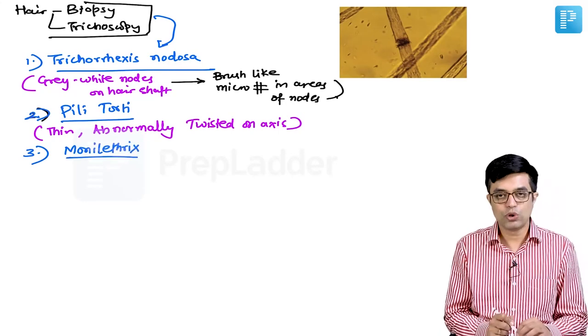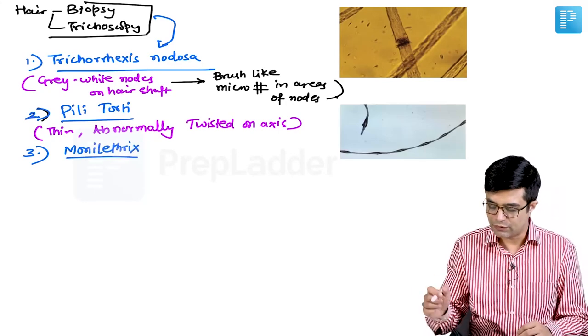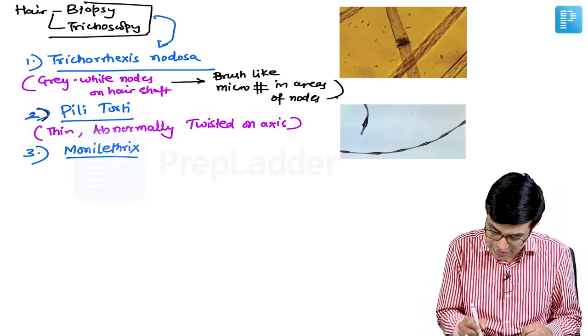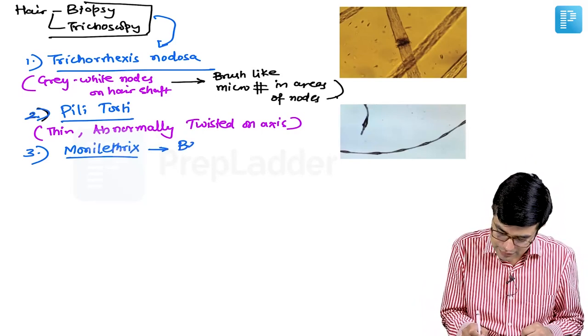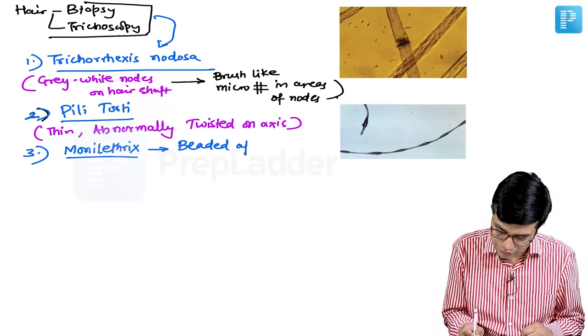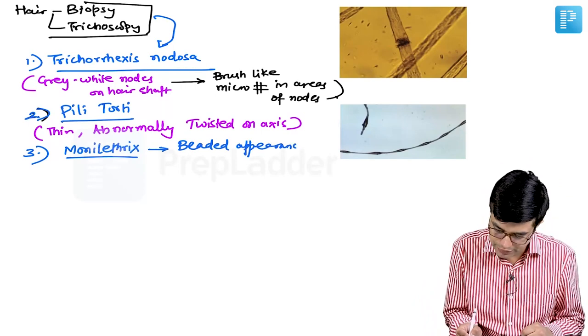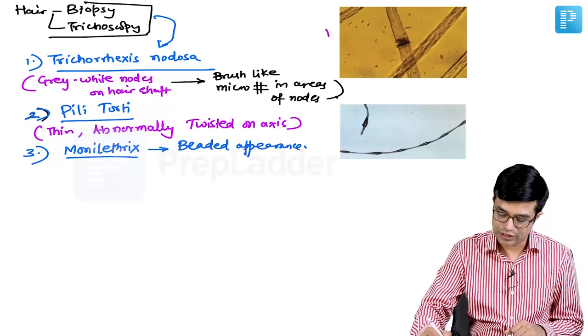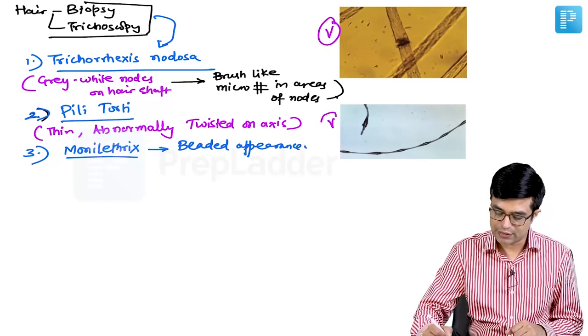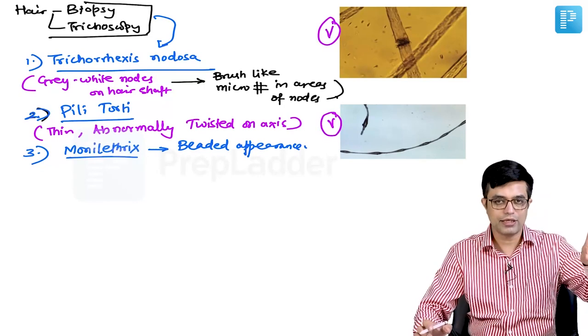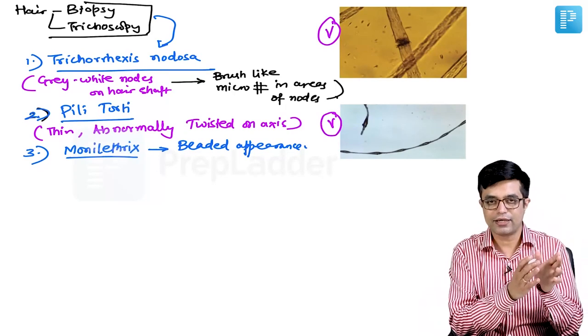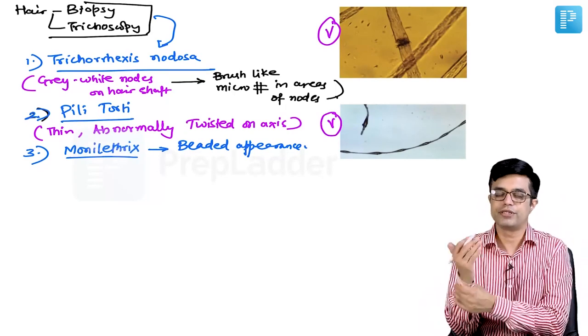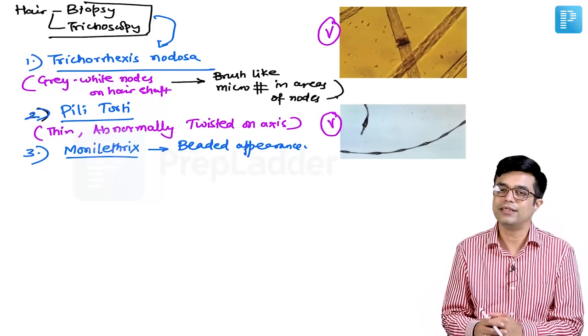What will you find in monilethrix pattern? This type of a pattern can be seen. Beaded appearance of the hair on microscopy is called monilethrix. This can be asked as a potential visual. This can be asked as a potential visual along with the clinical image which I showed, and they can ask you it is related to which syndrome? The answer will be Menkes Kinky Hair Syndrome.